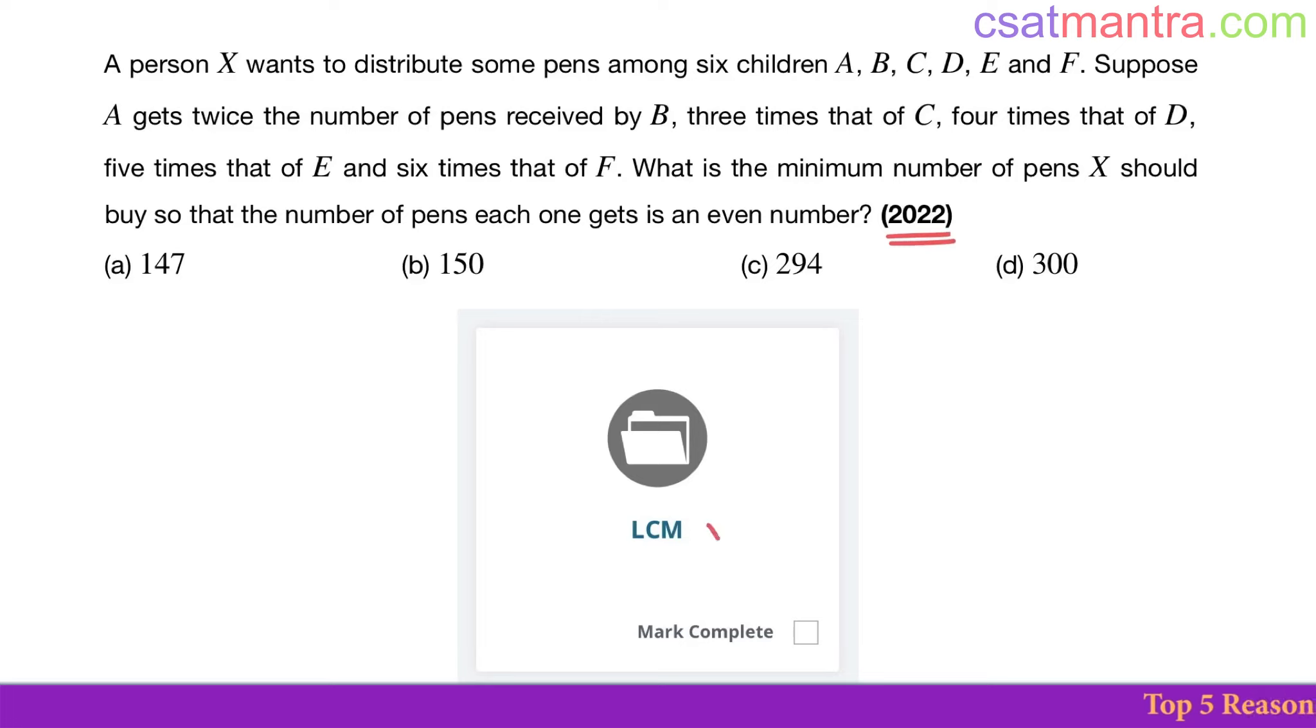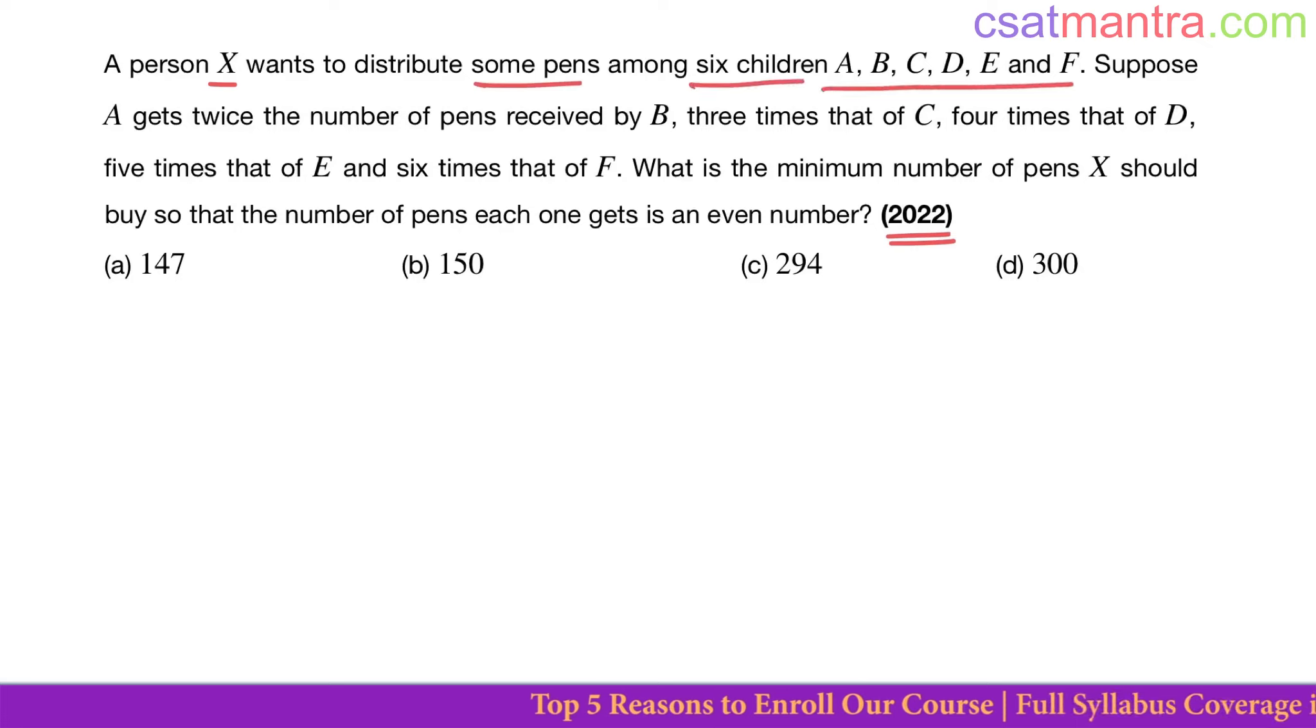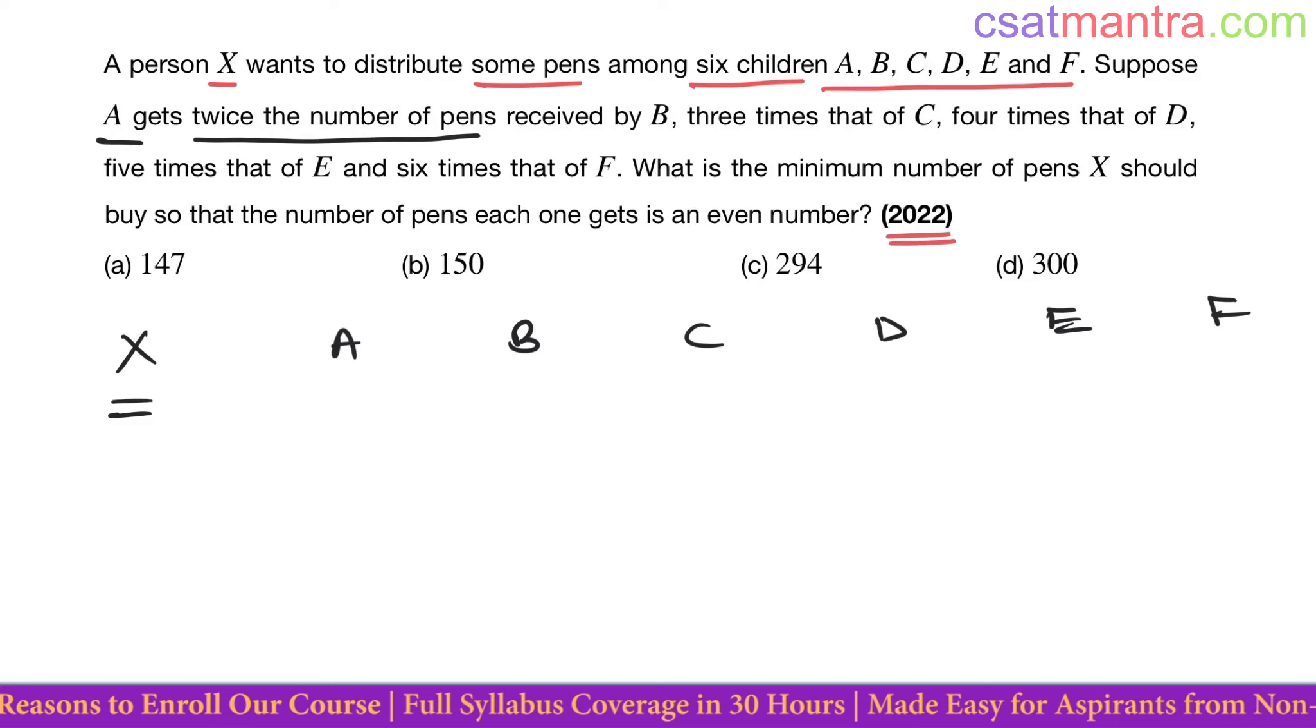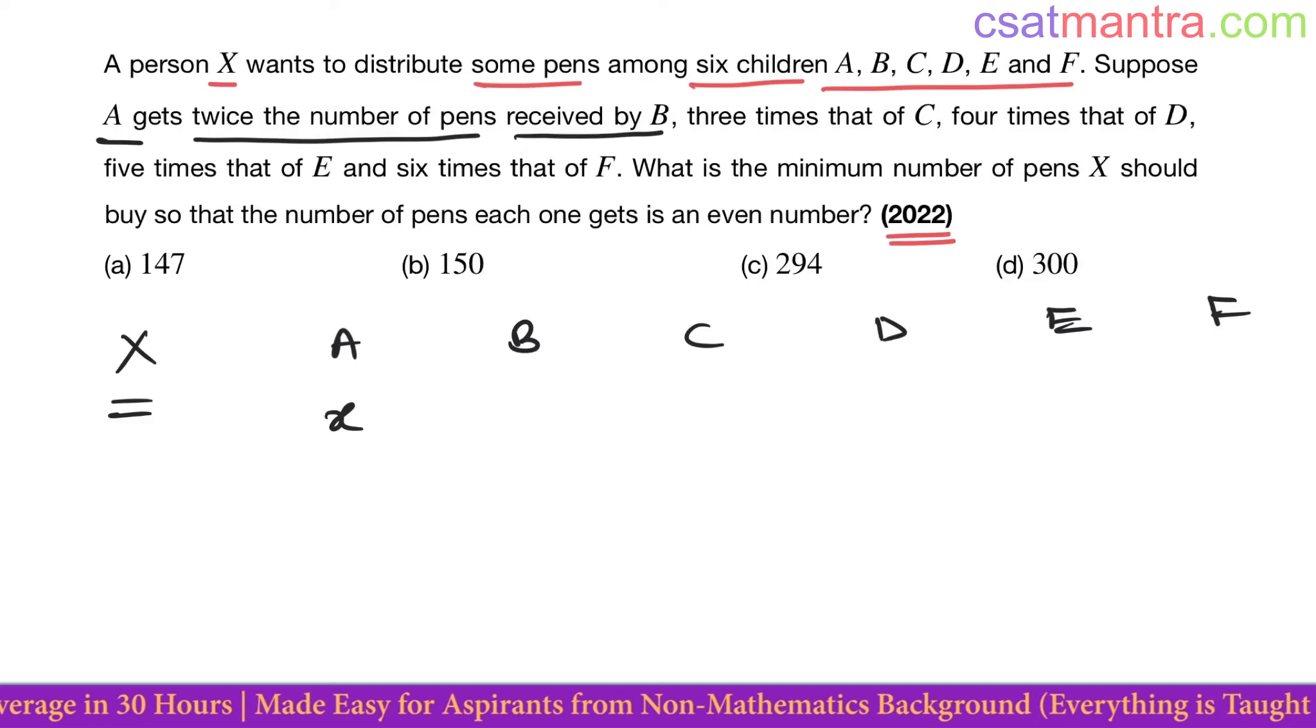2022 question based on LCM. A person X wants to distribute some pens among six children A, B, C, D, E and F. So here we have X and six children. Now suppose A gets twice the number of pens received by B. That means B gets half of the number of pens received by A. Let's say A receives X pens, B will receive X by 2.